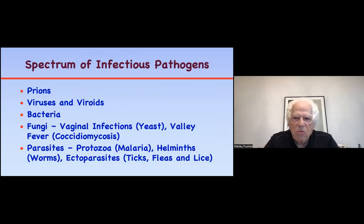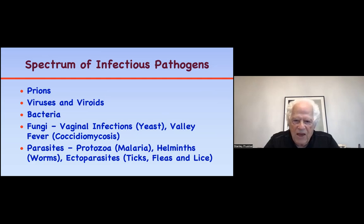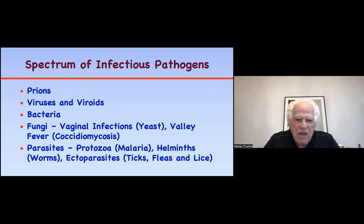Let's look at the spectrum of pathogens. There are prions, viruses, and viroids — viroids are negative nucleic acids discovered by Ted Diener almost half a century ago — bacteria, fungi, such as yeast infections, vaginal infections, valley fever like coccidiomycosis, and then parasites like malaria, worms, ticks, fleas, and lice. There are enormous numbers of small pathogens — more than there are planets in our solar system and beyond through the Milky Way.